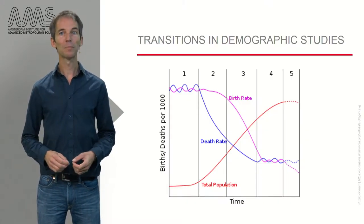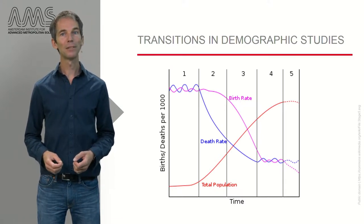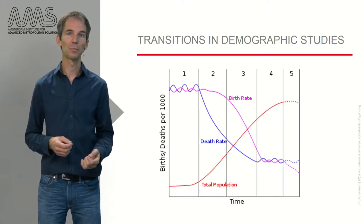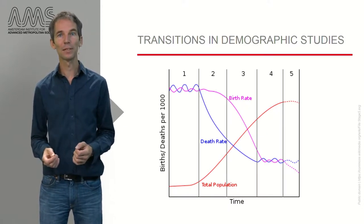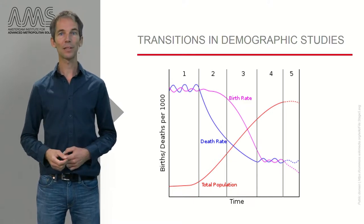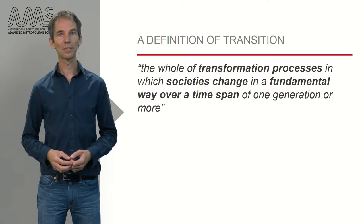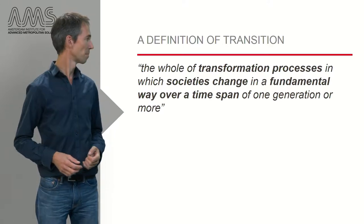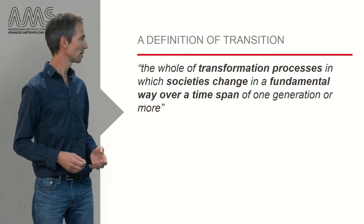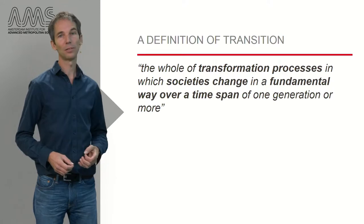The term transitions is derived from demographic studies and was used to describe the major changes in population over time. Combinations of increasing mortality and decreasing birth rates led to a transition in population growth patterns and societies as a whole. Here is a common definition of a transition in sustainability studies: the whole of transformation processes in which societies change in a fundamental way over a time span of one generation or more.